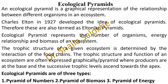These are also termed as Eltonian pyramids. Ecological pyramids represent the number of organisms, energy relationships, and biomass of an ecosystem. The trophic structure — meaning the nutritive series — of a given ecosystem is determined by the interaction of the food chains.